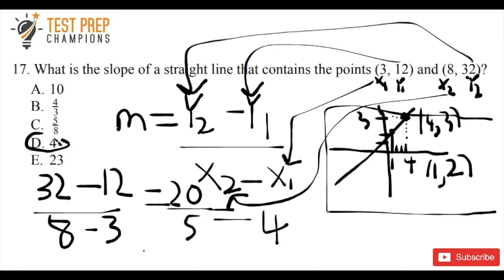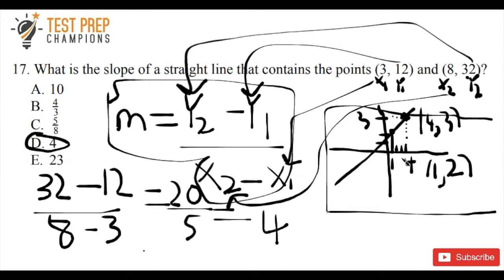And then we're done. The slope is 4 — it's just telling you the steepness of a line. The formula is really the most important thing from this video. We took the points (3, 12) and (8, 32), plugged them into y2 minus y1 over x2 minus x1, and got a slope of 4. If you liked this explanation, please give me a thumbs up, and subscribe so you won't miss any more GED math practice problems. This is Parker from testprepchampions.com — thank you so much for your time, and good luck on your test.